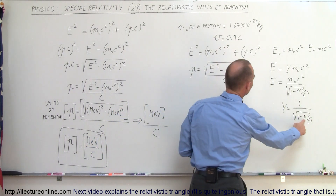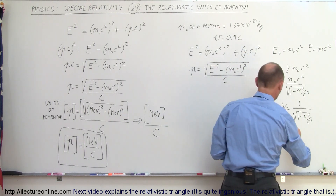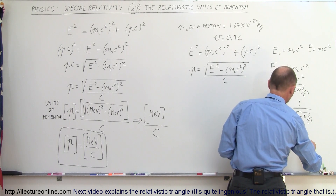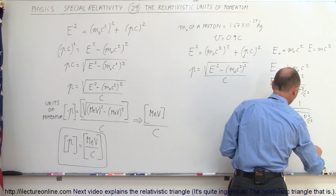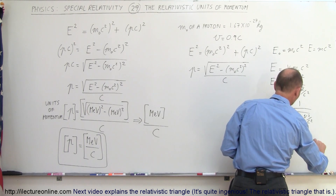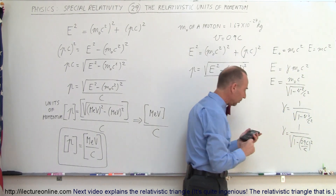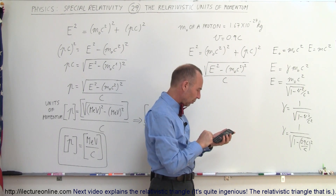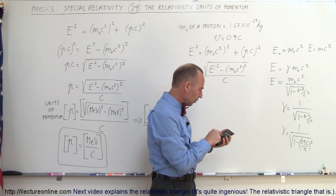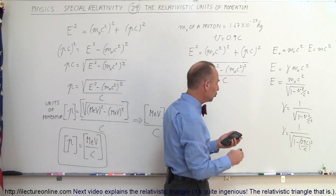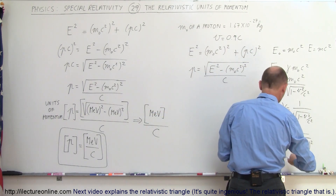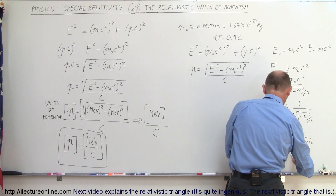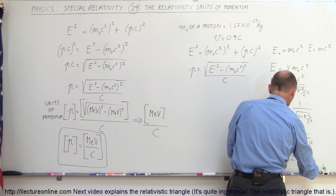If V is equal to 0.9C, then gamma in our case would be equal to 1 divided by the square root of 1 minus 0.9C divided by C, quantity squared. The C's cancel out, and we end up with 0.9 squared subtracted from 1, take the square root of that, and then take the inverse, and we get 2.294. So with the proton moving at 90% of the speed of light, gamma is 2.294.